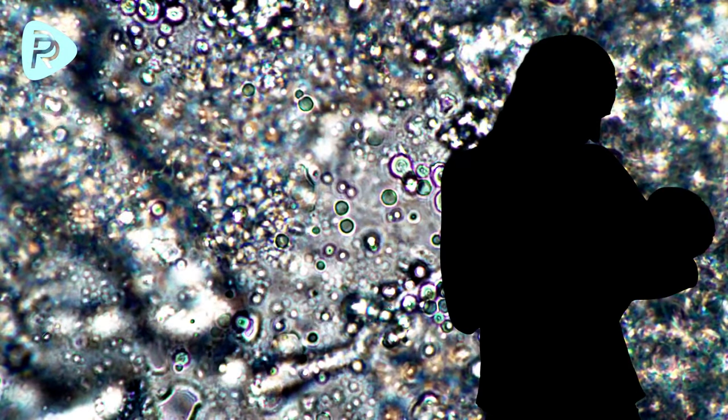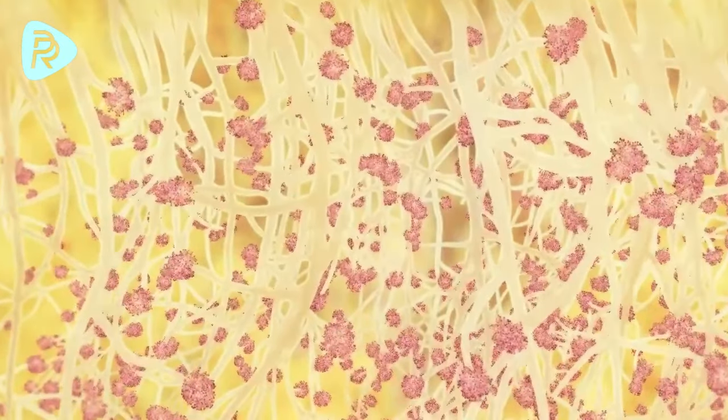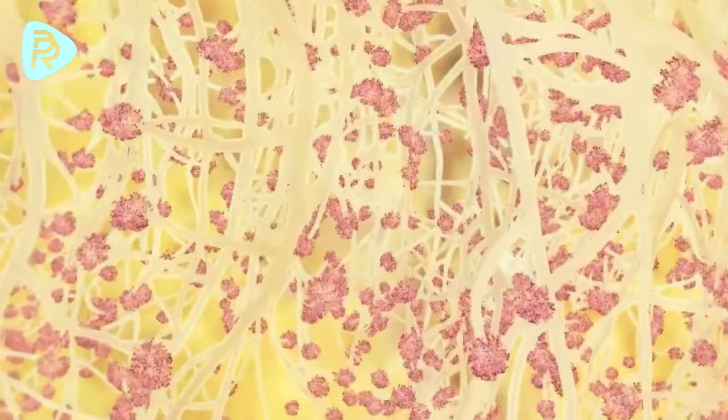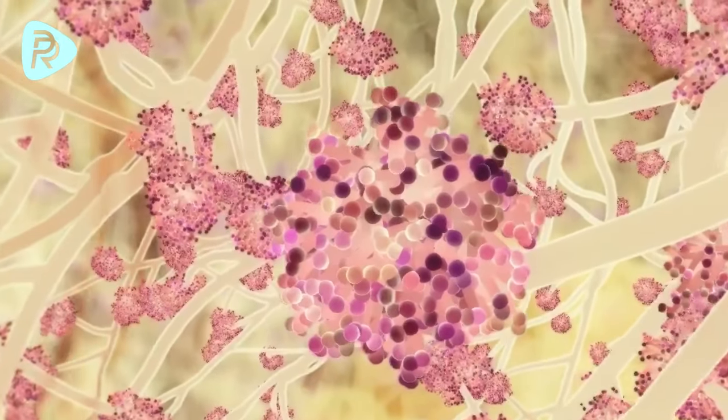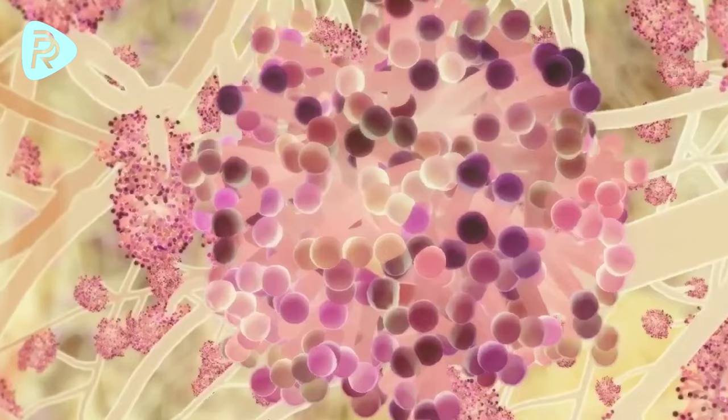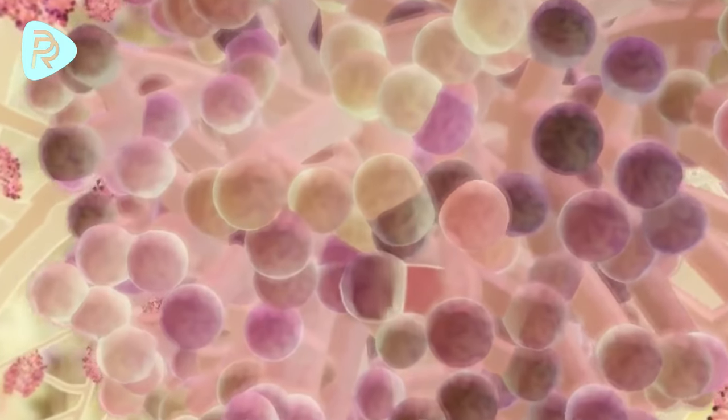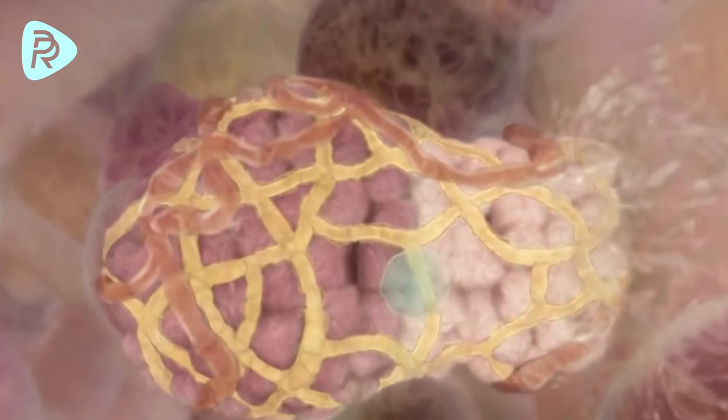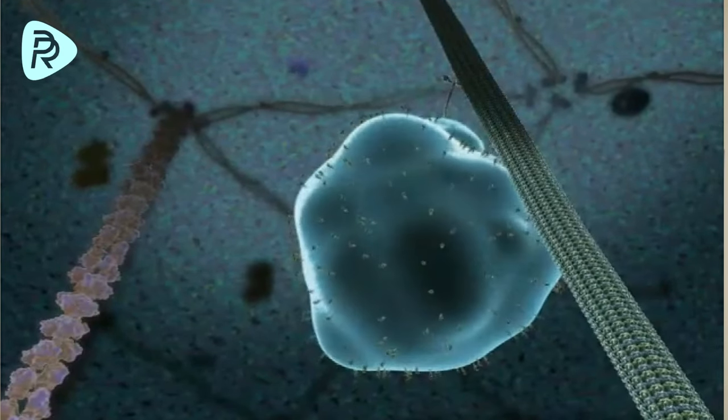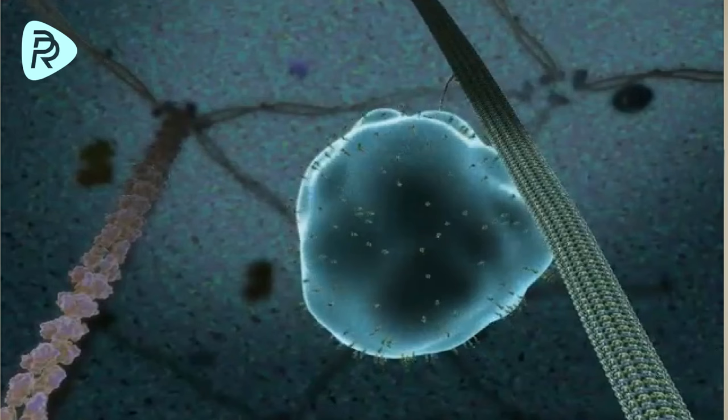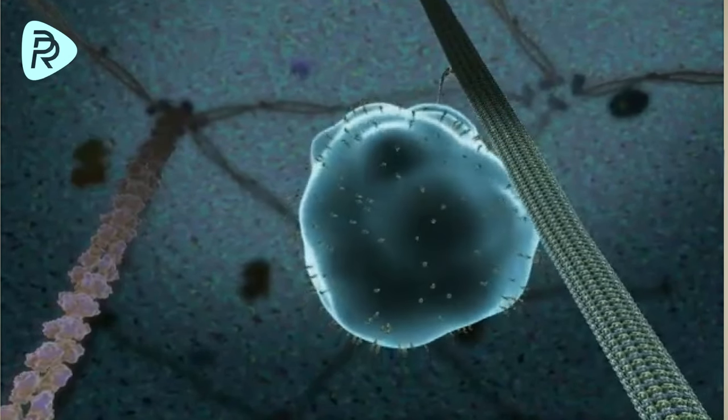The endoplasmic reticulum is an amazing factory made up of pipes and sacks. The milk components produced here need to be packed and moved to the Golgi apparatus. During this process, the endoplasmic reticulum's membrane starts to form soap-like foam and a small sack departs from the endoplasmic reticulum. These sacks are moved to the cell organelle called the Golgi apparatus through the rail system we just talked about.